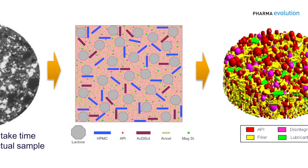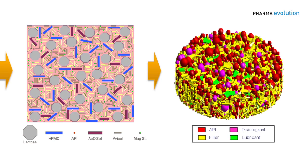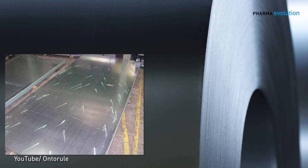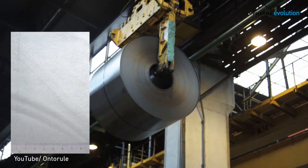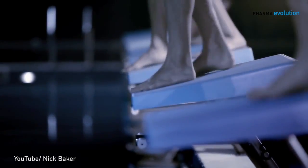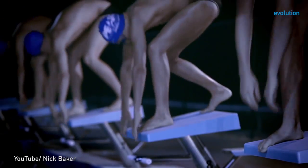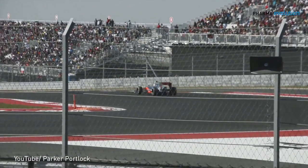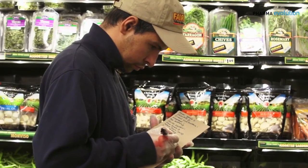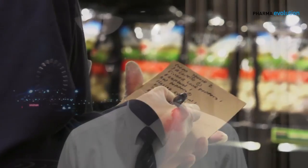Now this approach isn't a new one — it's the materials science and engineering approach, and it's been applied to the steel industry, to people making materials for swimsuits in the Olympics, and it's very big in Formula One, in sport, and in the food industry. What the pharma industry needs to do is to play a little bit of catch-up and get more materials science thinking into the way that it understands its products and its processes.